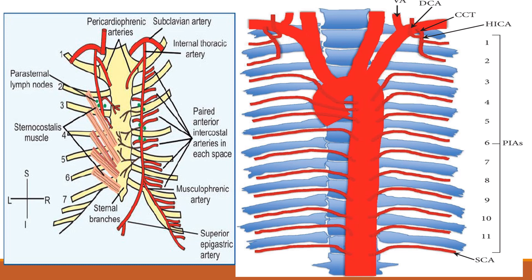From the third intercostal space onwards, the high-pressure anterior intercostal arteries rush into the lower-pressure posterior intercostal arteries at the region of anastomosis. This pressure difference results in tortuous vessels and formation of many collaterals around the anastomosis region. These enlarged and tortuous vessels cause notching of the undersurface of the rib.